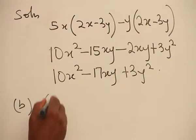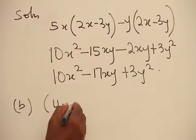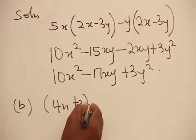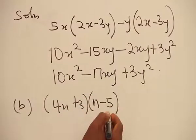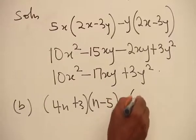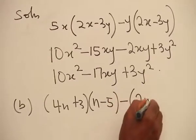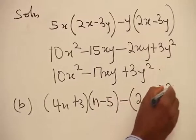Another case is 4n plus 3, then multiplying n minus 5, and then you are subtracting 2n minus 3 all squared.